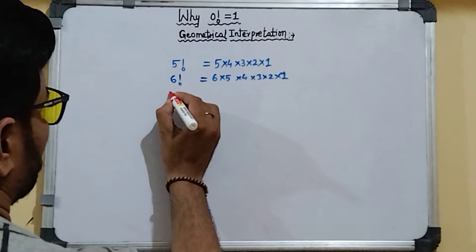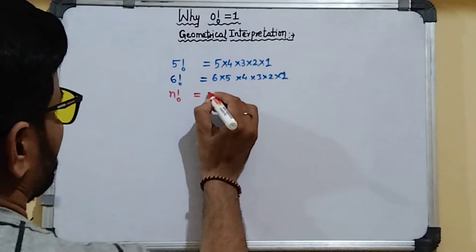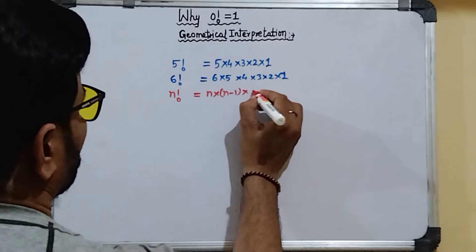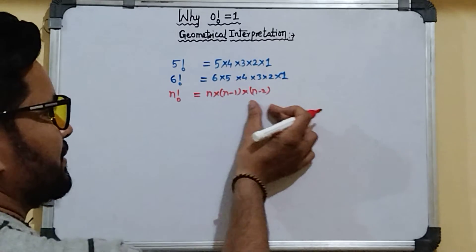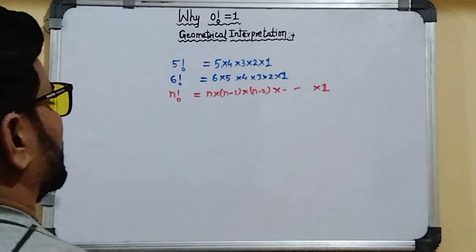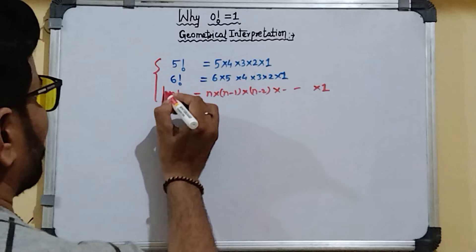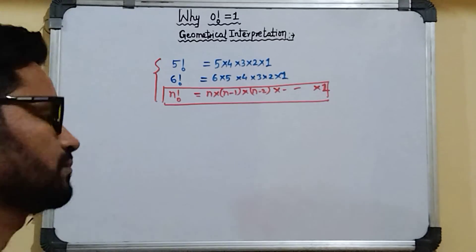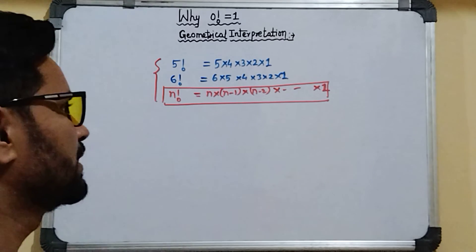So in general, if we write factorial n, then we can write it as n × (n−1) × (n−2) × ... × 1, in decreasing order, one by one down to 1. This is the factorial notation of a number.